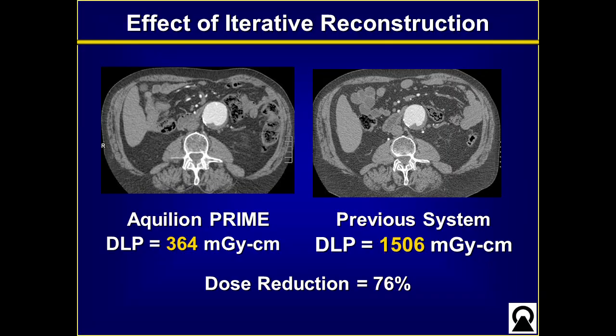You can see the benefits of these choices quite easily. Here's a patient with an infrarenal abdominal aortic aneurysm. On our new scanner, the DLP was 364. On our old scanner, same patient, the DLP was 1506 — more than a 75% reduction in dose. And if you look at the image quality, it's comparable, or if anything a little bit better looking at the paraspinal muscles on our new scanner at the much lower dose. This kind of decision is easy to make.